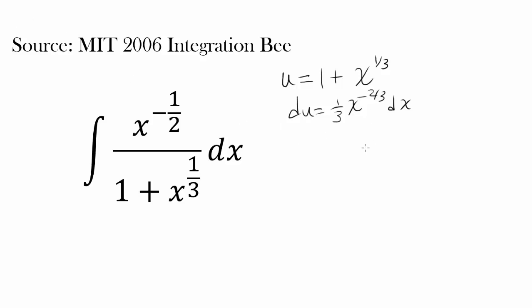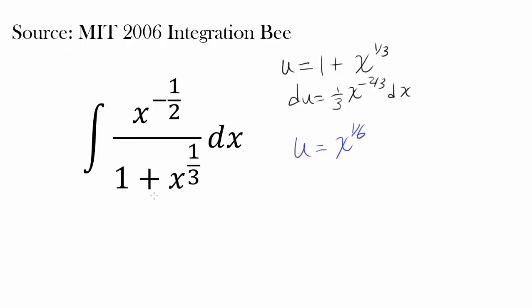And it turns out the best way to evaluate this is by letting our u be x to the 1/6 power and you may say why that seems so random and it turns out it's not as random as it may seem because you have 1 plus x to the 1/6 squared in the denominator.